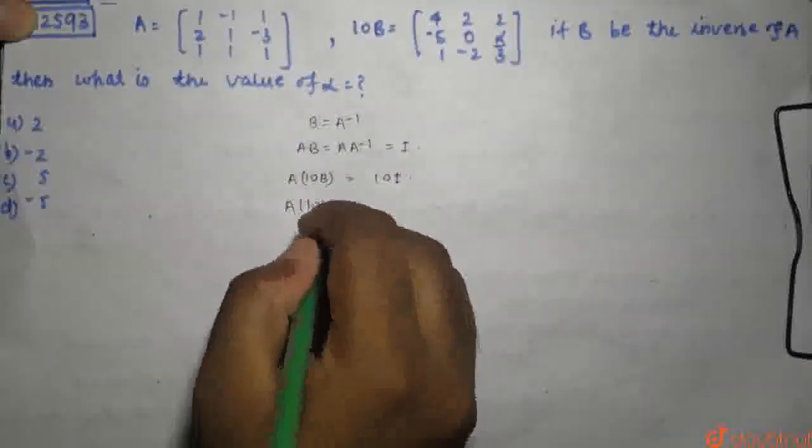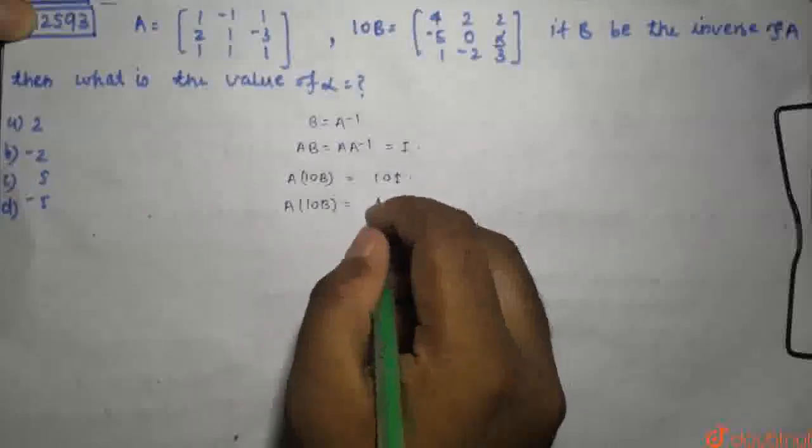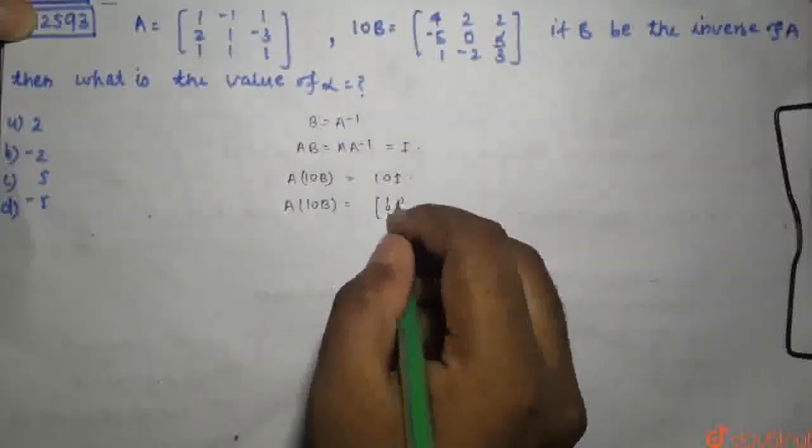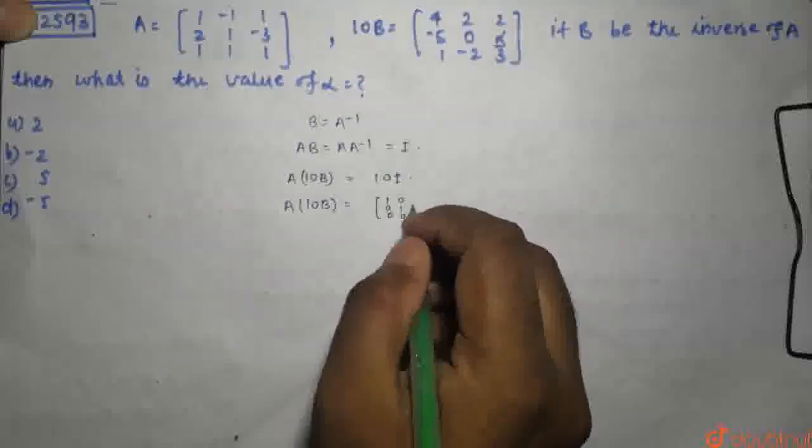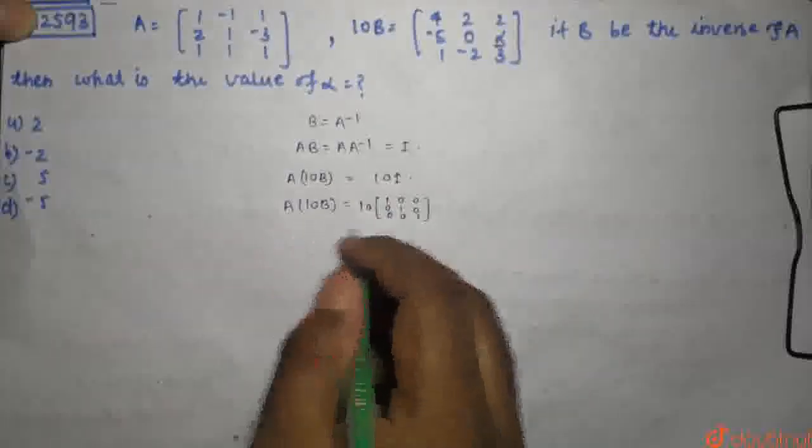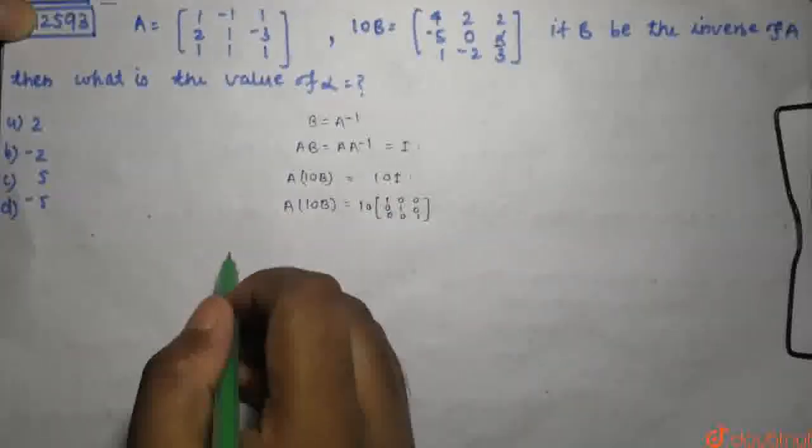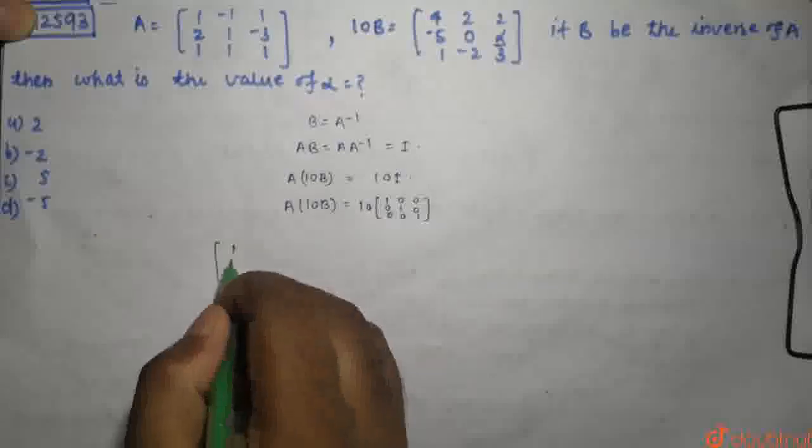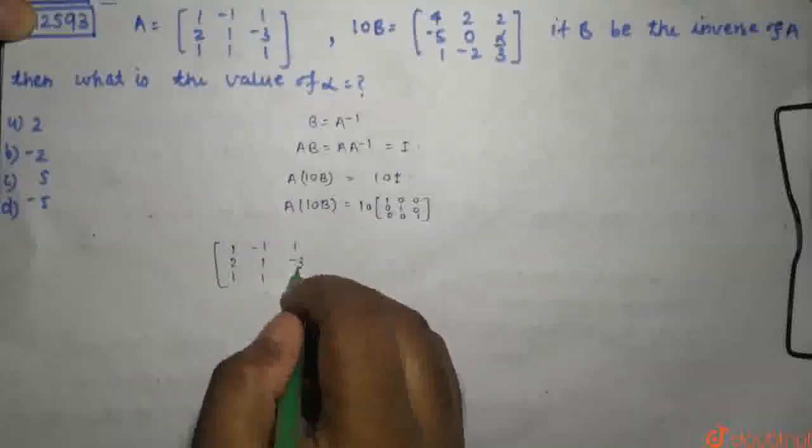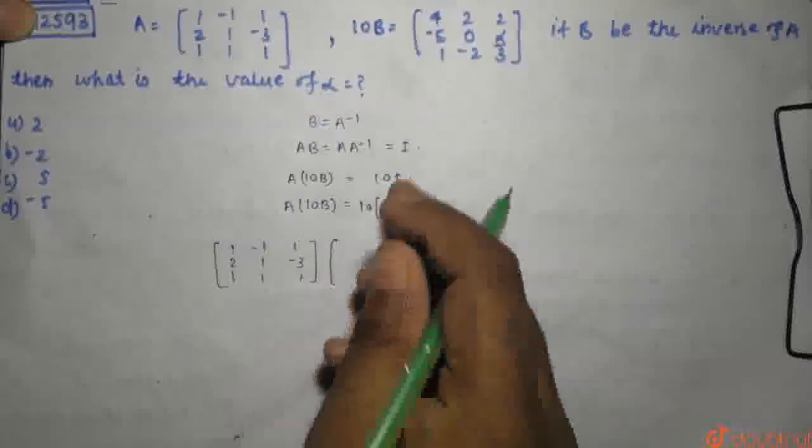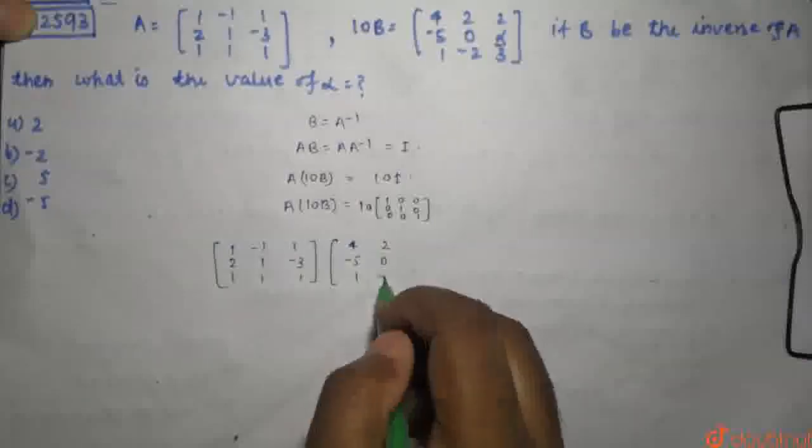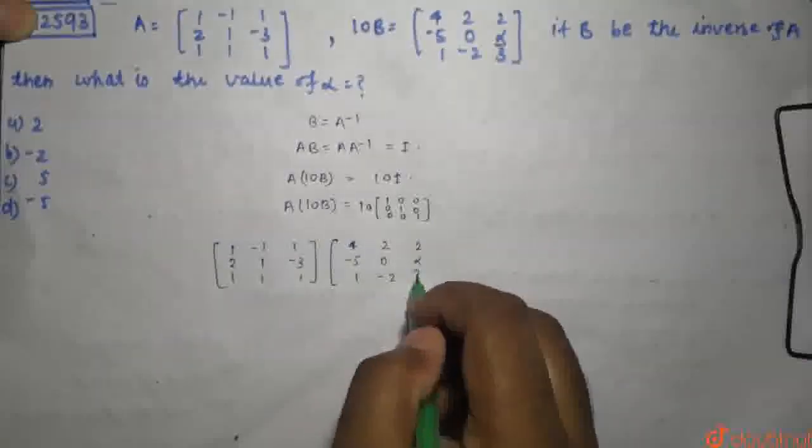So A into 10B. Matrix A is [1, 2, 1; -1, 1, 1; 1, -3, 1]. Matrix 10B is [4, -5, 1; 2, 0, -2; 2, alpha, 3].